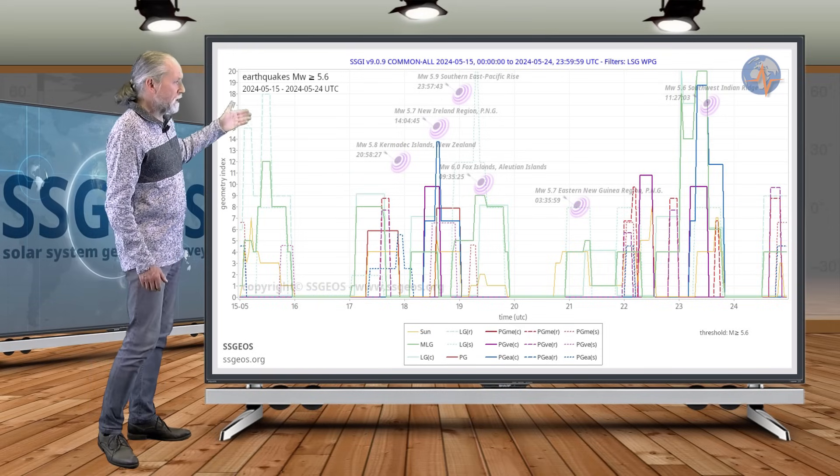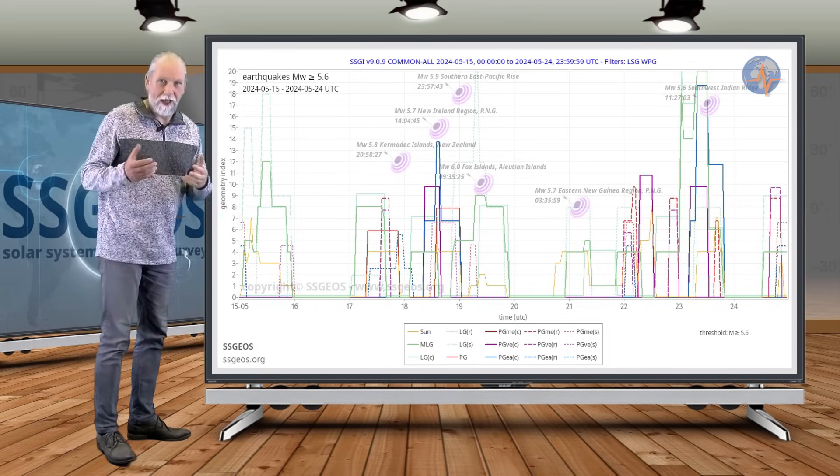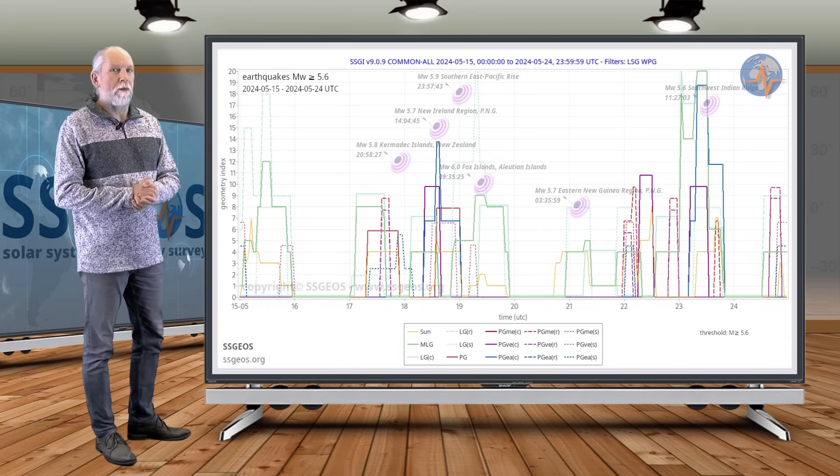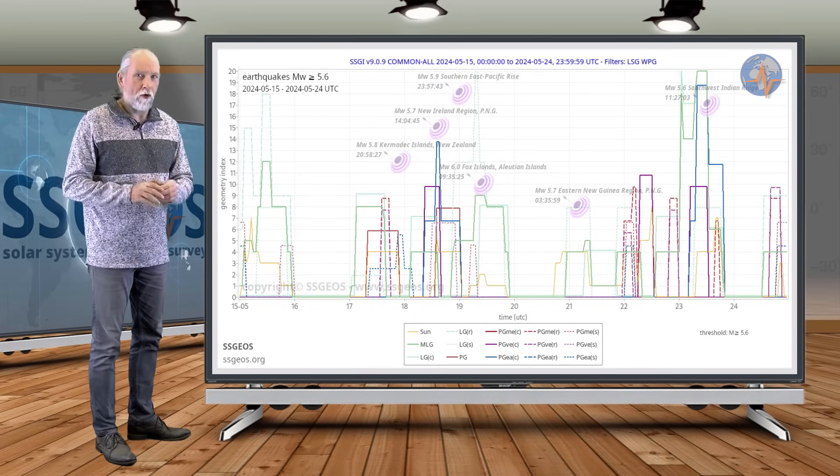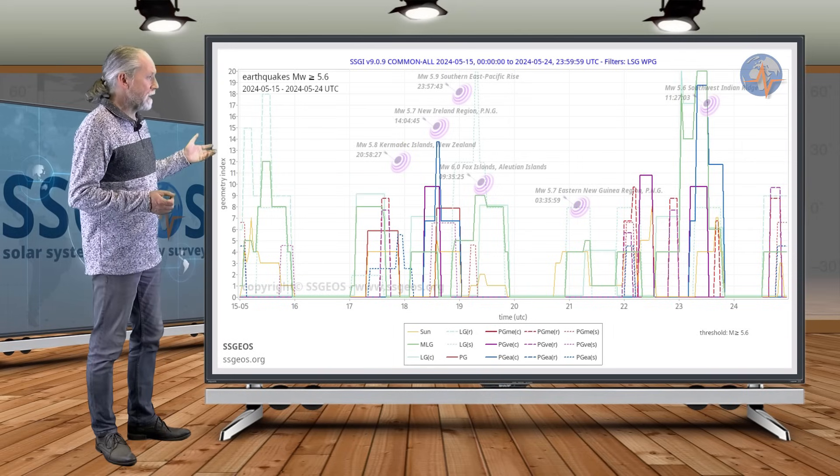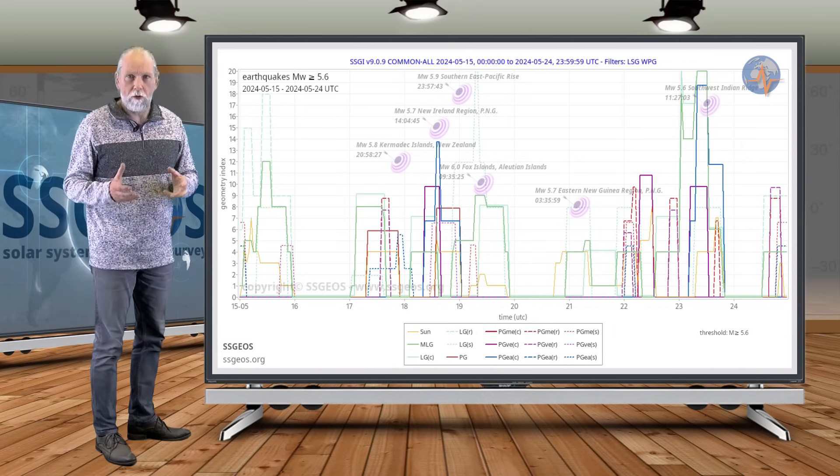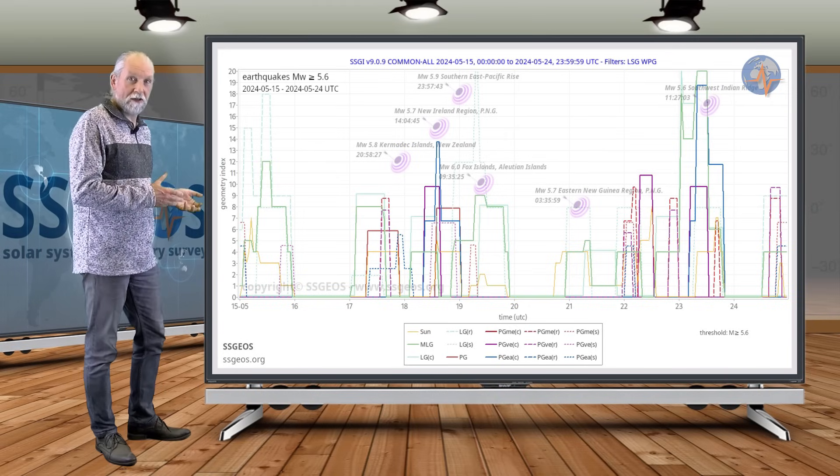And we see at the critical convergence on the 22nd, 23rd that we had this single larger earthquake, magnitude 5.6. And it is really not all that much and not what we actually anticipated because we actually estimated that the planetary geometry on the 22nd and the 23rd would be more critical than what we had on the 17th, 18th.